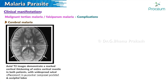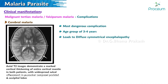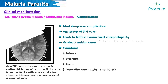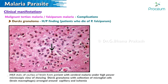Complications of falciparum malaria — Cerebral malaria: the most dangerous complication, mostly affecting the age group of 3 to 4 years. It leads to diffuse symmetrical encephalopathy with gradual or sudden onset. It can present as seizure, delirium, or coma. Mortality rate is high, up to 15 to 20%. Dürck's granuloma is a histopathological finding in patients who die of Plasmodium falciparum.